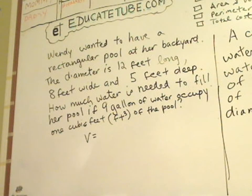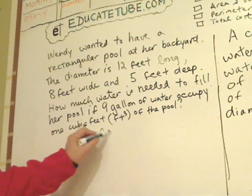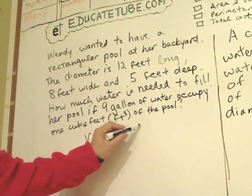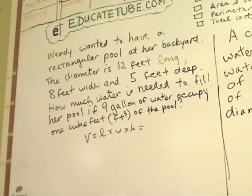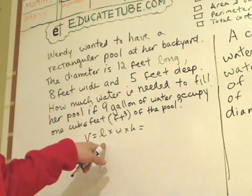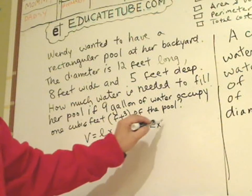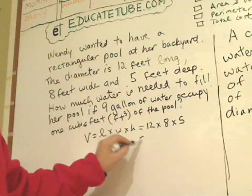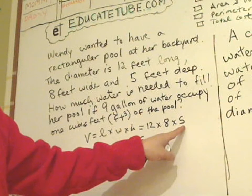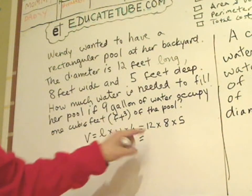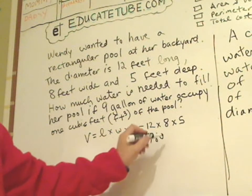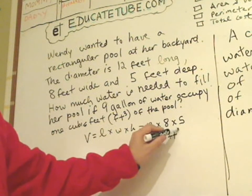So it looks like a rectangular shaped, three-dimensional shaped pool. So we have length times width times height. Okay, so it's a rectangular box pool. And the length is 12 times the width is 8 times the height is 5. So 8 times 5 is 40 times 12 is 480 feet, cubic feet.